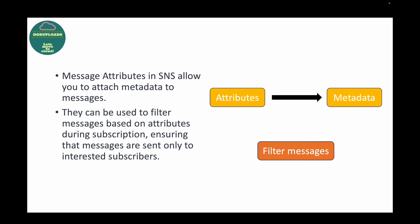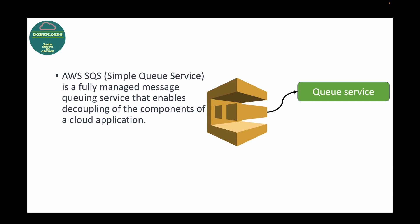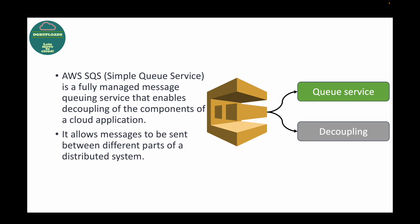Next we look at five interview questions for SQS. The first basic question is: what is AWS SQS? SQS stands for Simple Queue Service — a queue service where we can queue our messages. It is a fully managed service provided by AWS which enables decoupling of your applications. Unlike SNS, SQS follows a pull mechanism: a producer pushes a message to the queue, and a consumer pulls that message from the queue to process it.